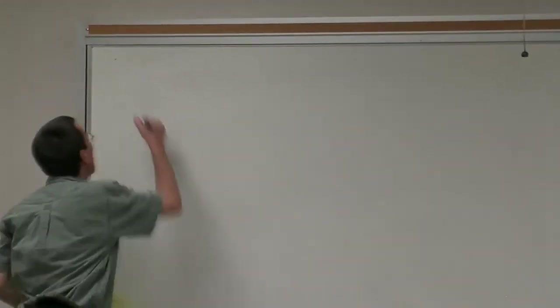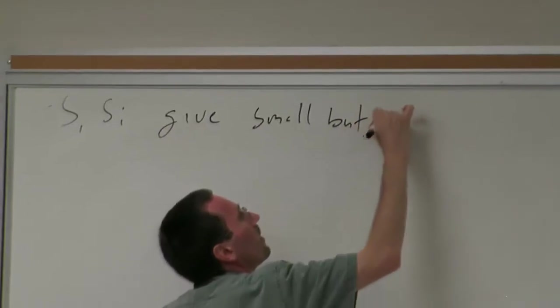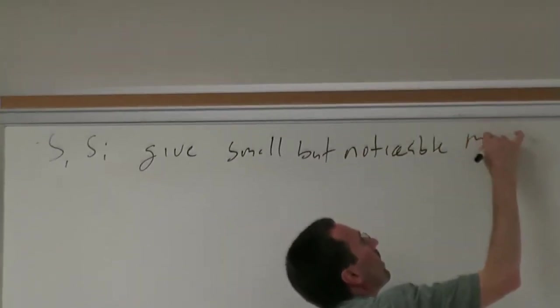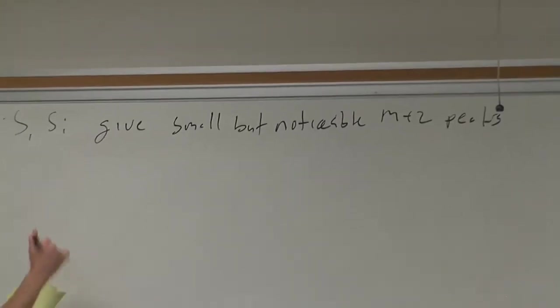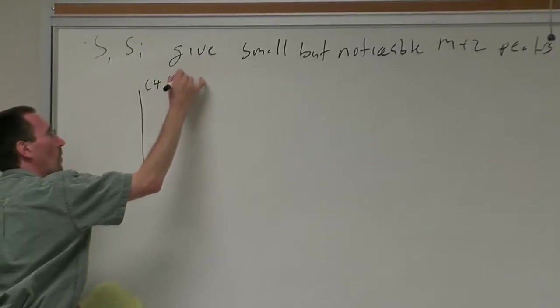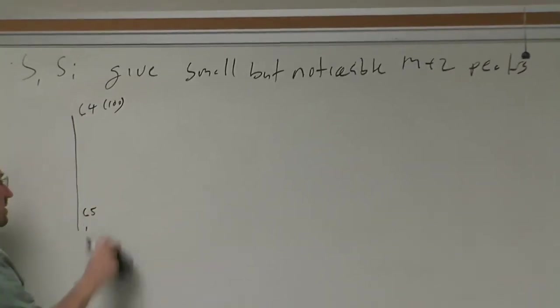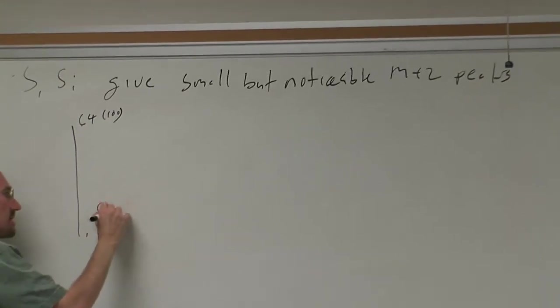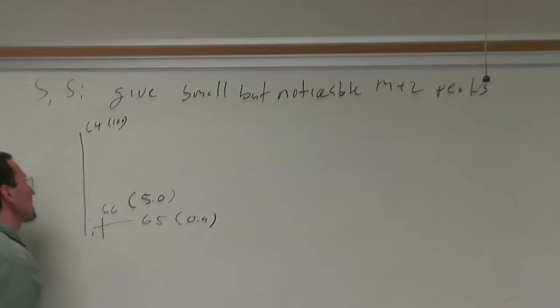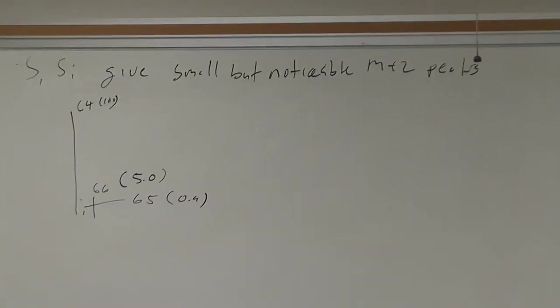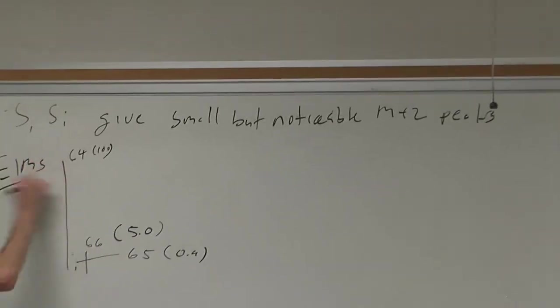Sulfur and silicon give small but noticeable M plus 2 peaks. Let's take a look. I'll make a little sketch here of a compound with a line at 64 of 100 relative intensity, a line at 65 and a line at 66. The line at 65 has 0.09, the line at 66 has 5.0. This is a real sketch of a real EI mass spec. The question is what's the compound?